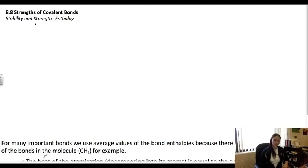In this last video for the chapter, we're going to look at section 8.8, which is strengths of covalent bonds. The first thing we're going to talk about is the stability and then strength of the bond and how that relates to what we call bond enthalpy.